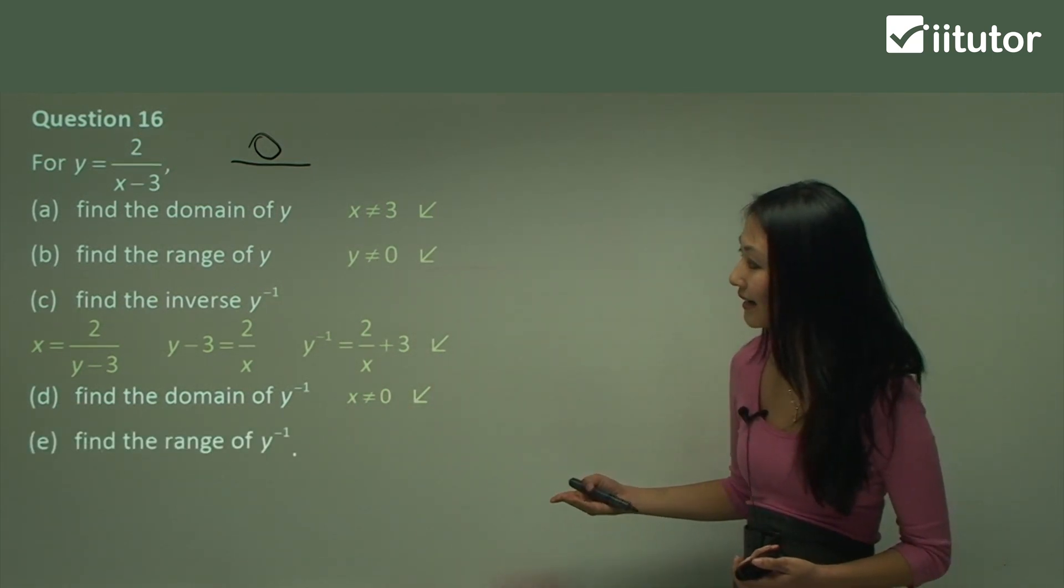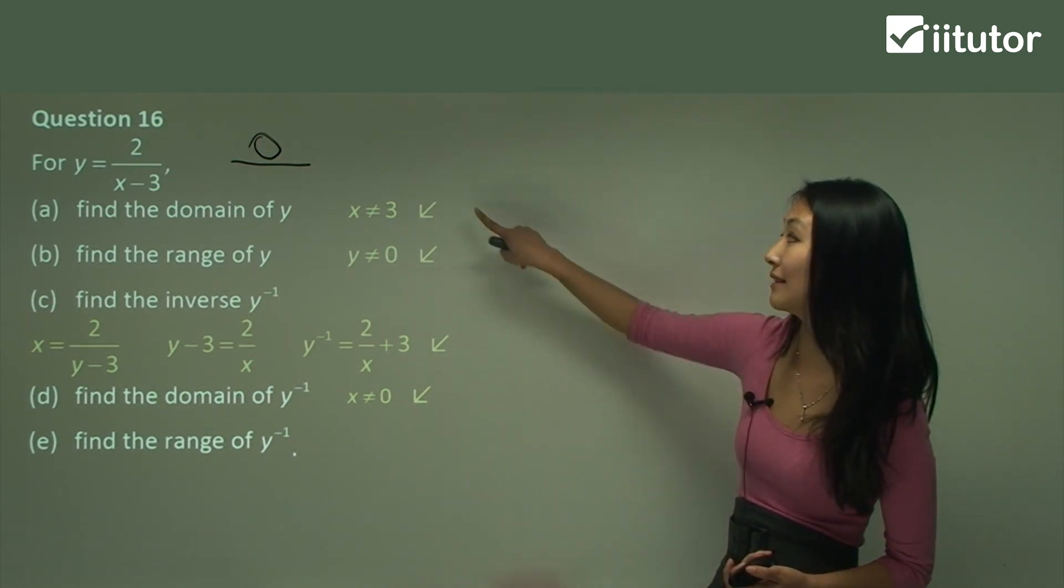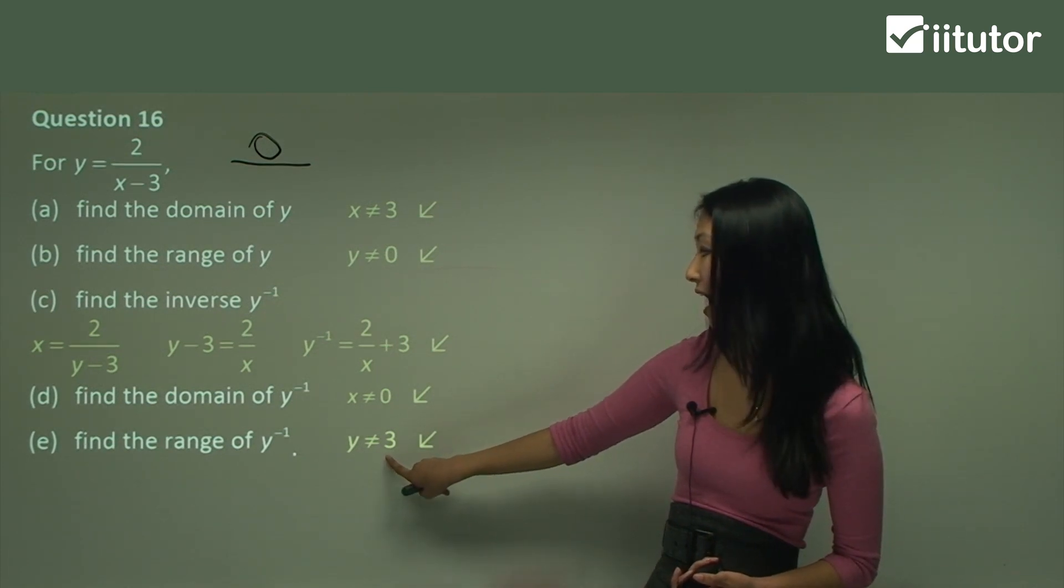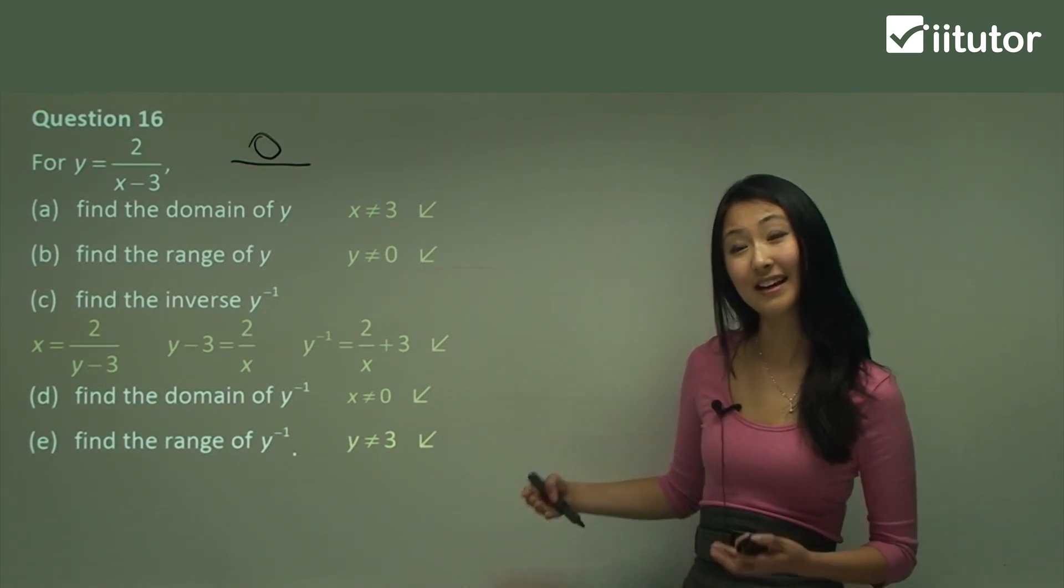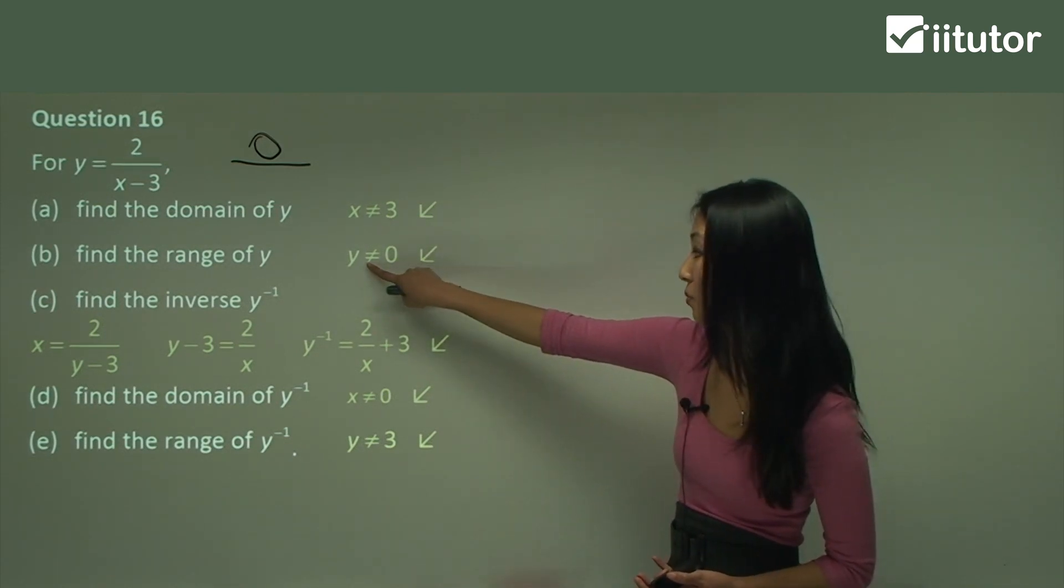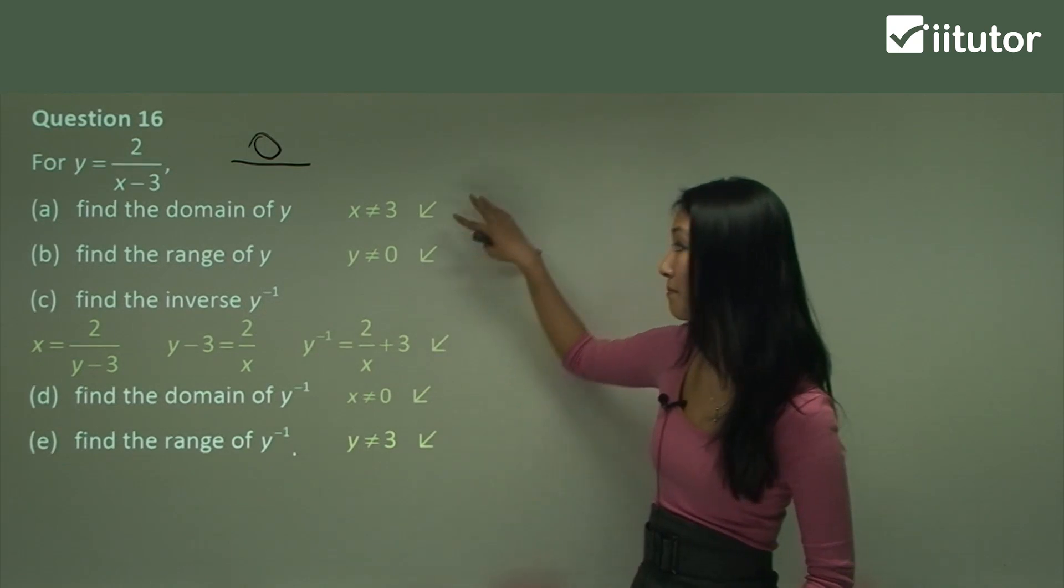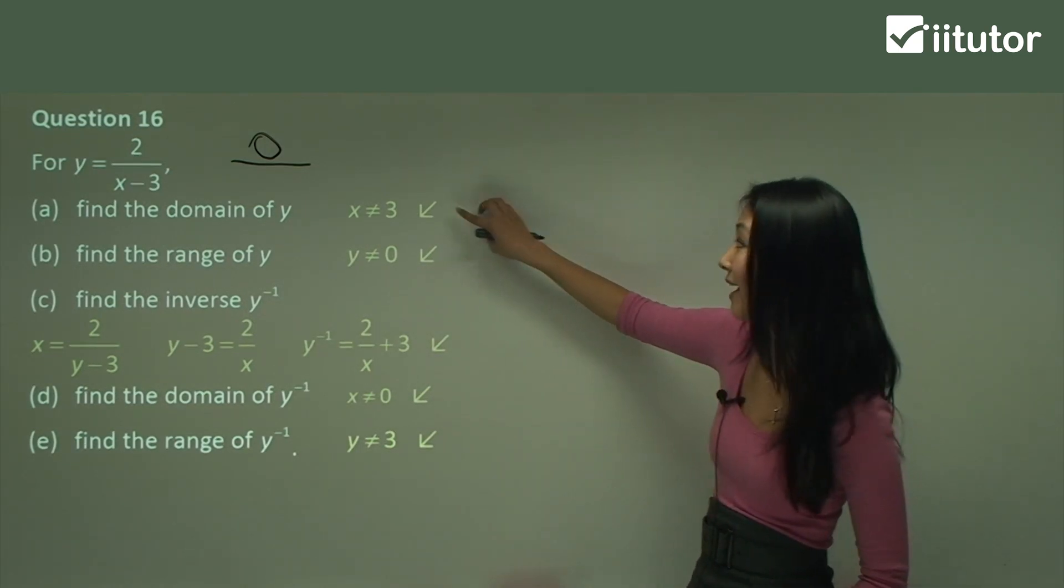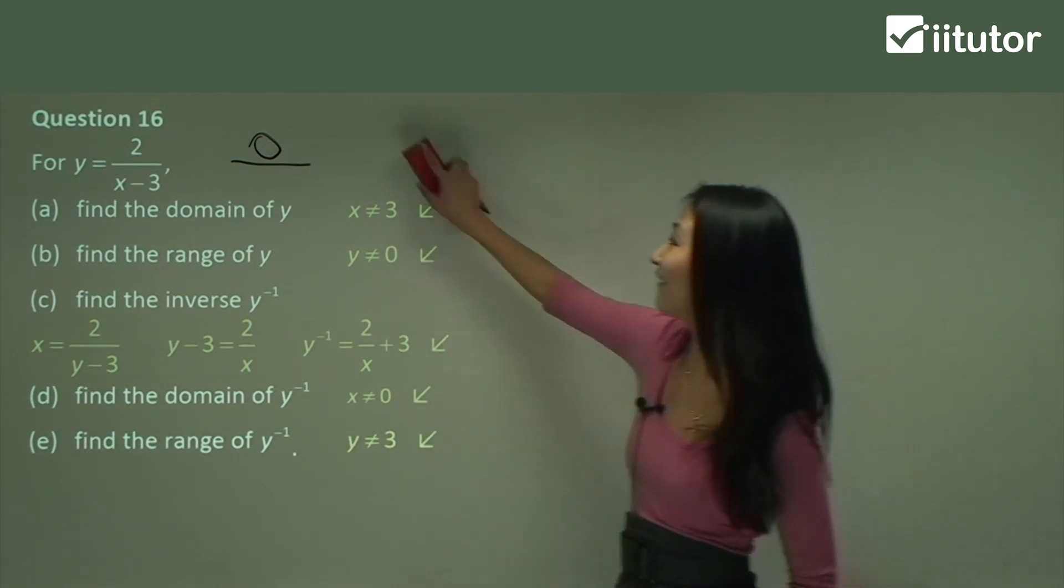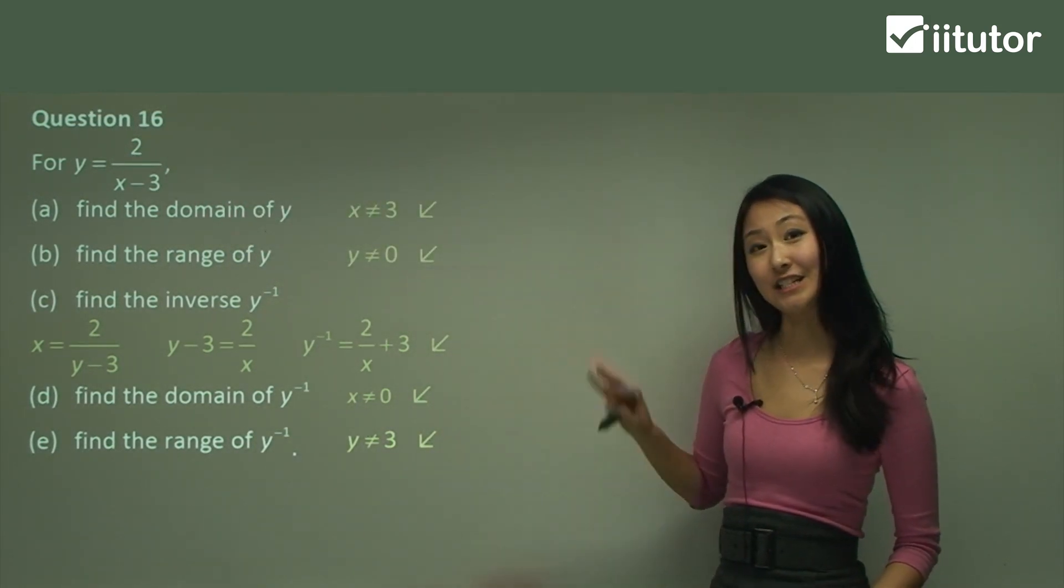So similarly, to find the range of the inverse, I'm going to look at the domain and switch that x for y. So y can't equal 3. So can you see what I've done? To find the domain, I've used the range and changed the y to an x. And to find the range, I've used the domain of the original function and changed the x to a y. Great. So this is when it's asking you to find the domain and range of the inverse.